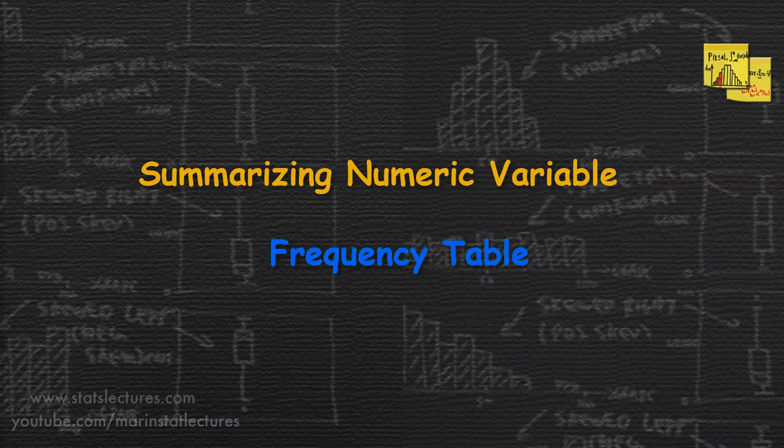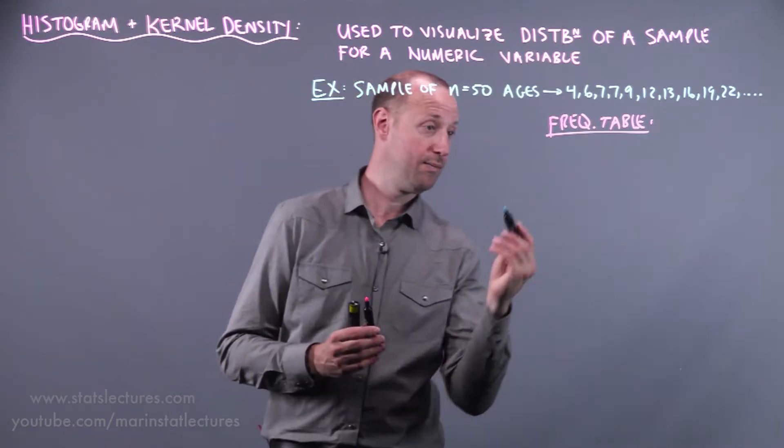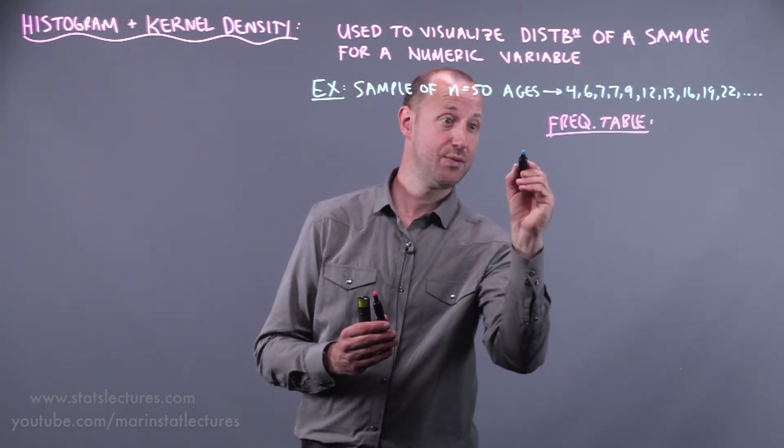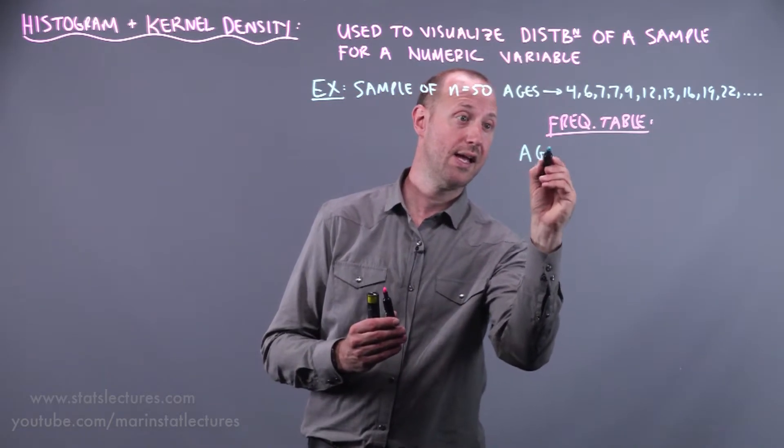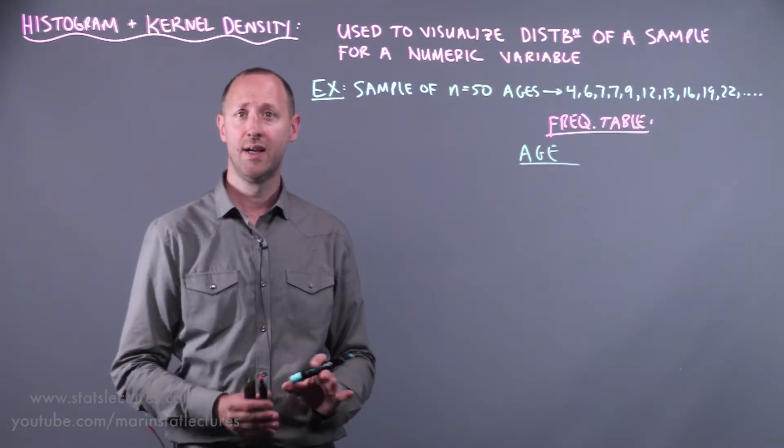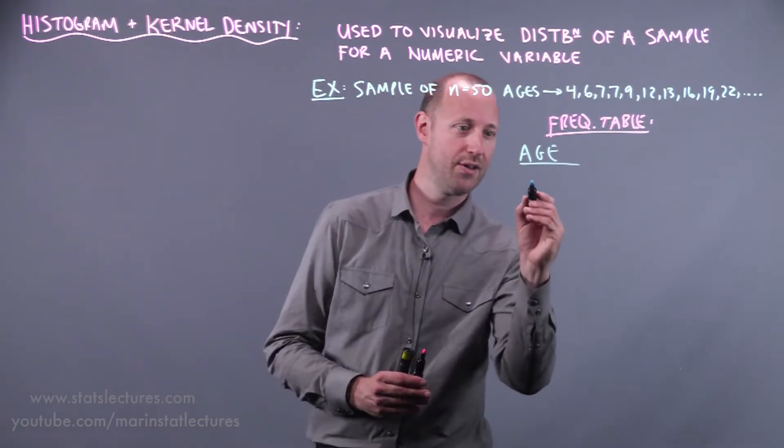The first thing we need to do is start by talking about a frequency table. What we can do is, well we're going to want to look at the distribution for our variable age and we can go through and create a bunch of bins or buckets or whatever we want to call them.